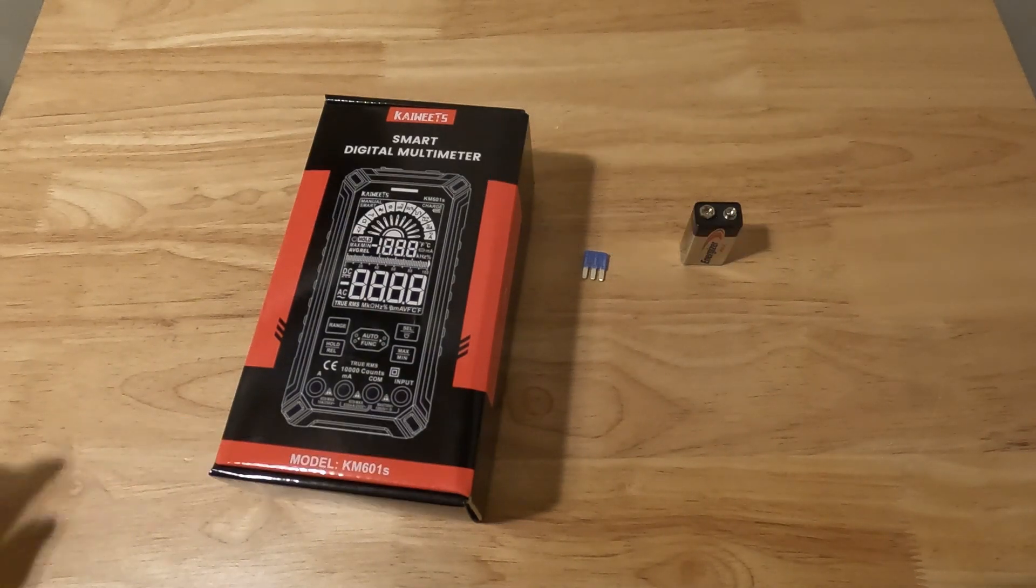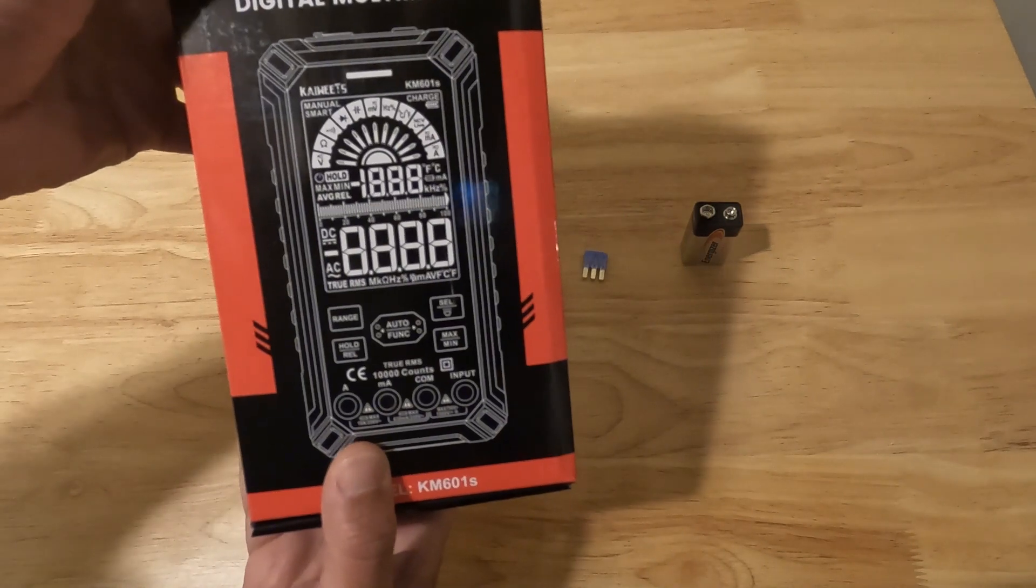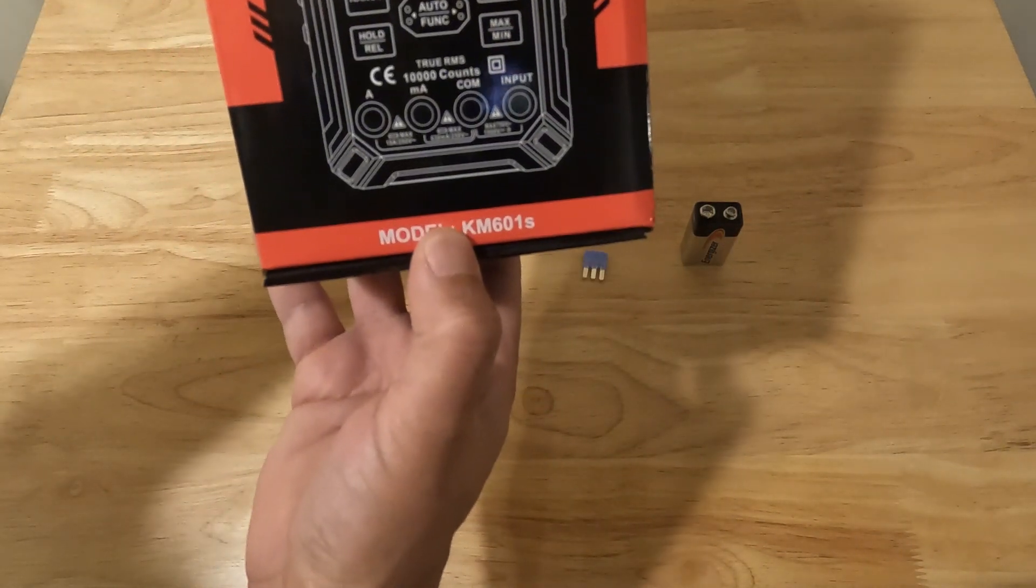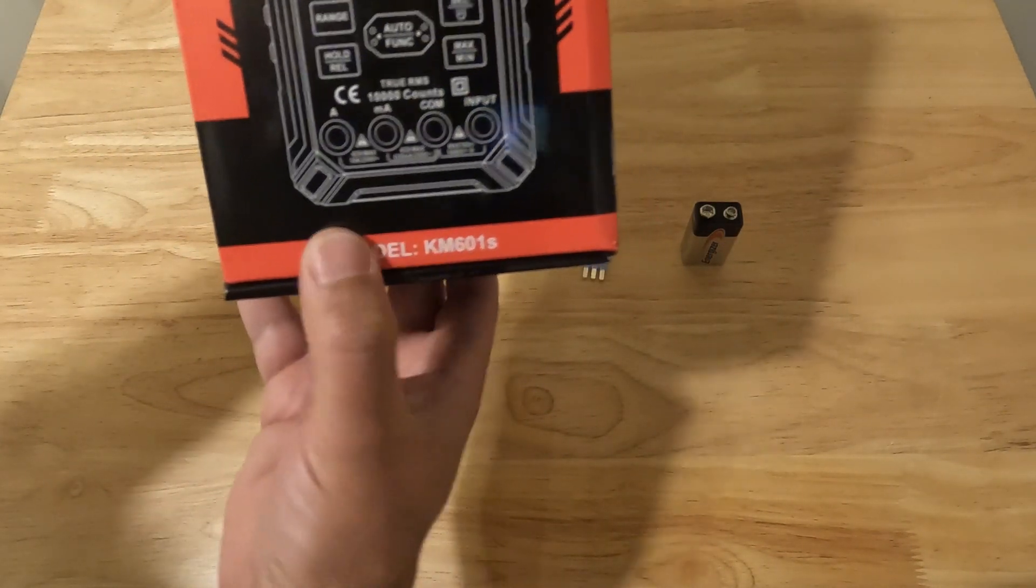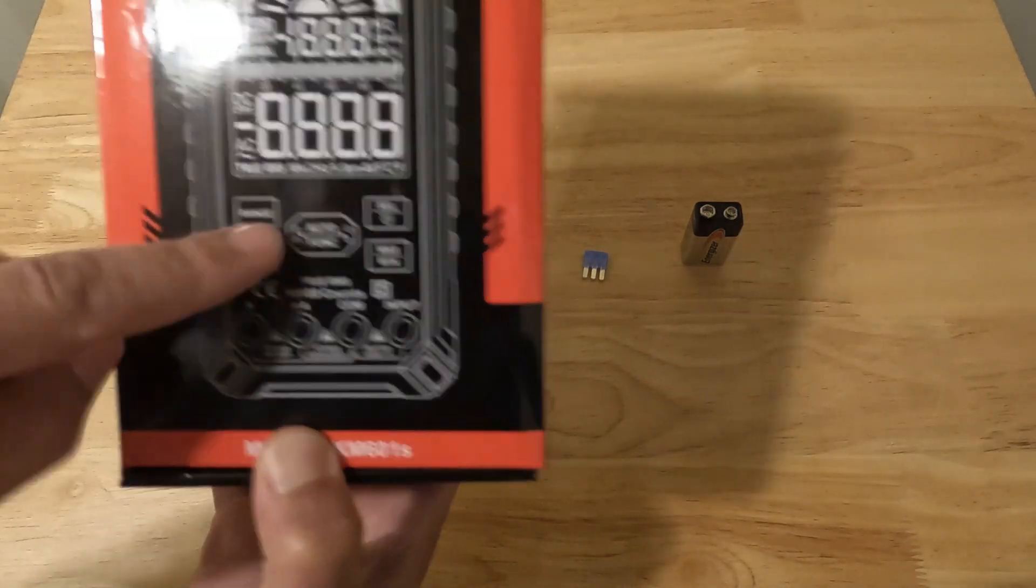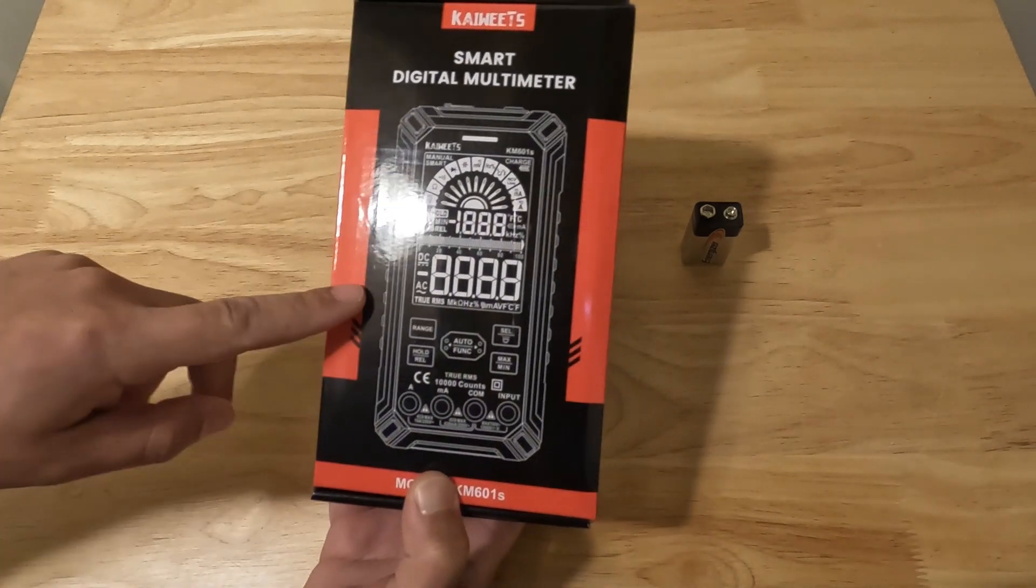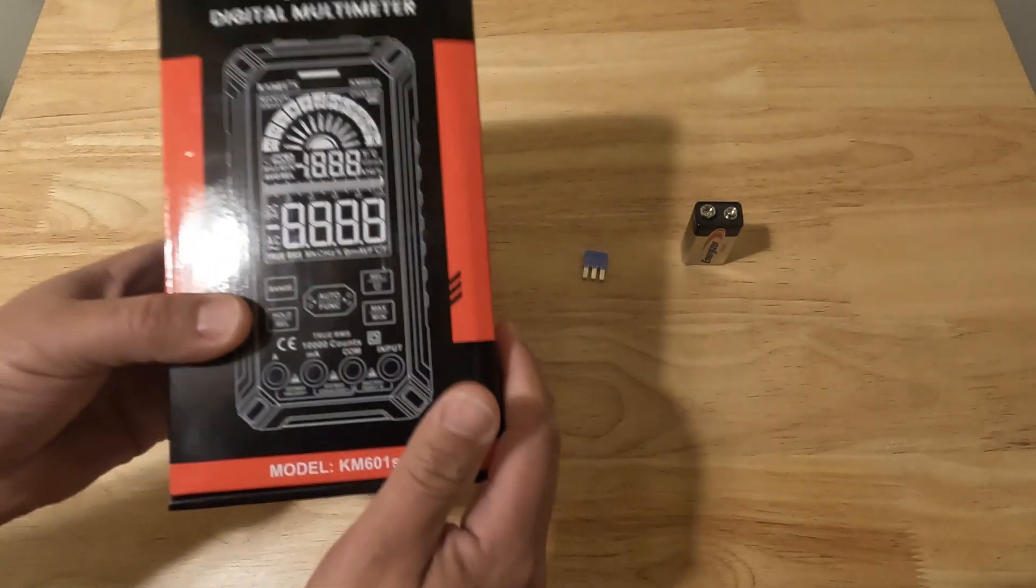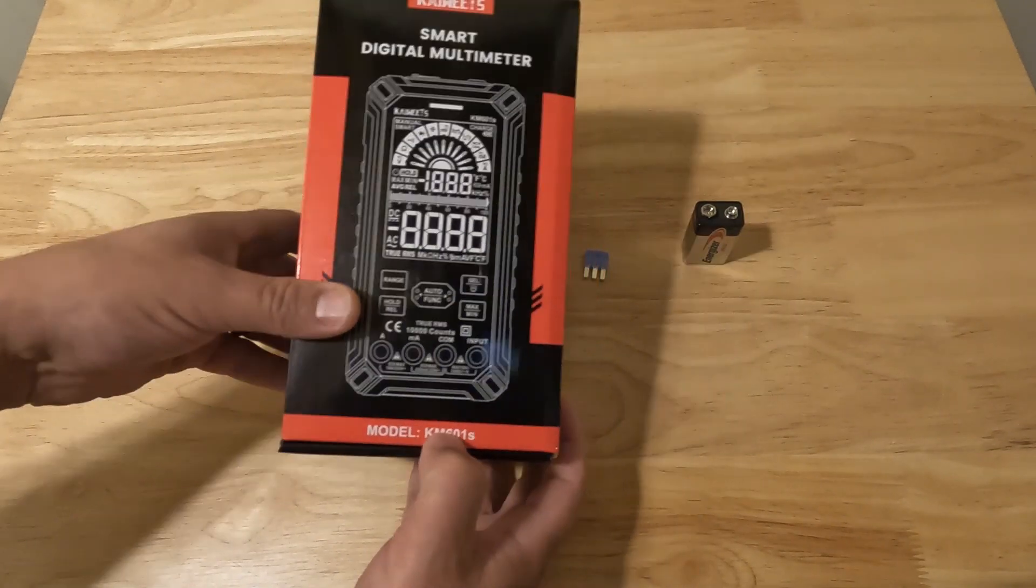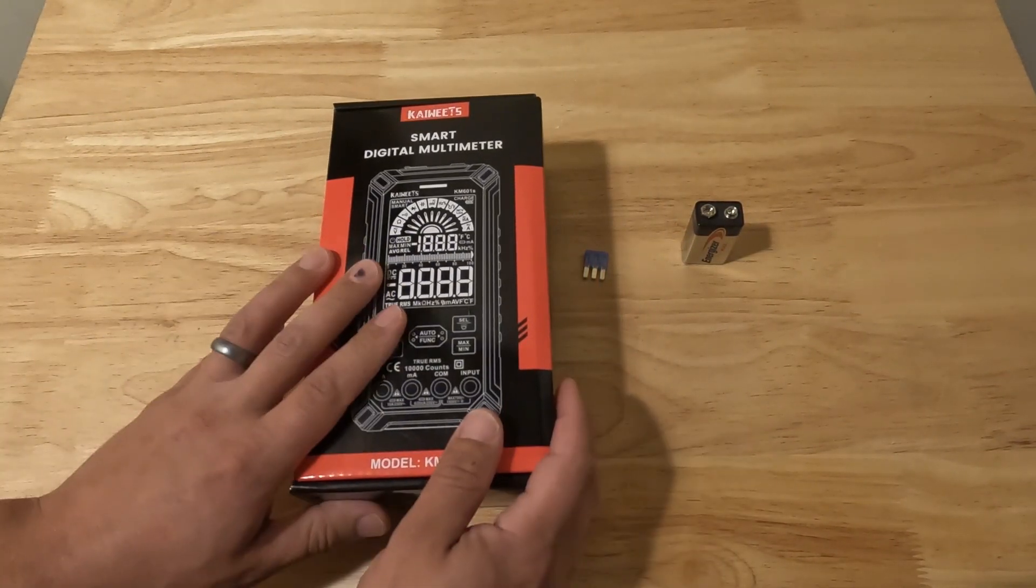Hey what's up guys, Matt here with Fix Anything Save Money. Today we're going to be walking you through this Kaiweets multimeter, model KM601S. If you subscribe to the channel and check out my other video, I do another review on the Kaiweets model number KM602 multimeter. They also sent me this 601S, so I'm going to be walking you through this and showing you how to use it.